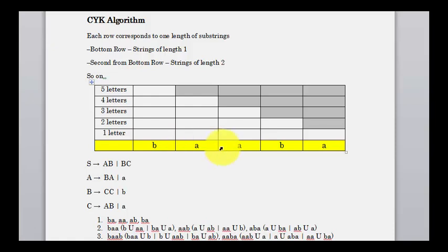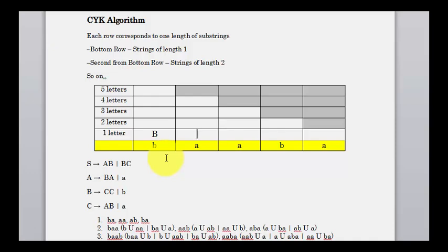The string we are testing is B A A B A. We need to determine if this string belongs to the language. In the first iteration, we look at each letter individually: for B, the variable responsible is capital B; for A, the variables responsible are capital A and capital C. So B maps to B, and A maps to A and C.